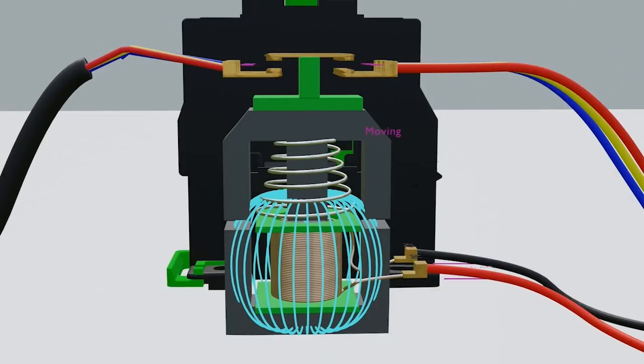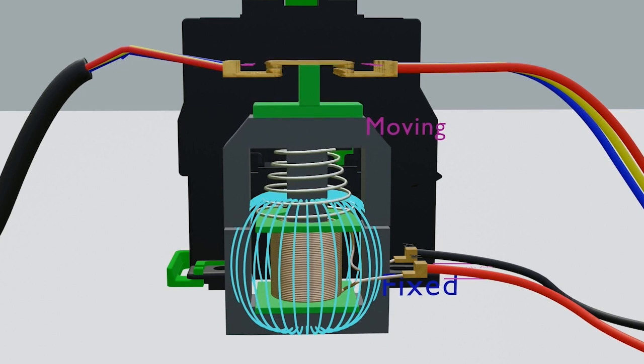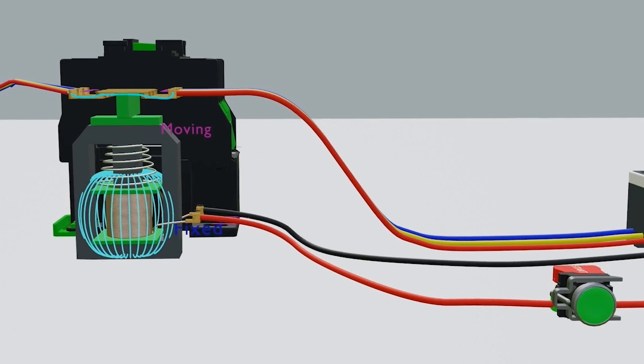Due to that, the top side core is moving core and the bottom core is fixed core. Moving core is attracted by the fixed core and moves down as you see here. And that's why this contact gets closed and the supply will get transferred from source to load.